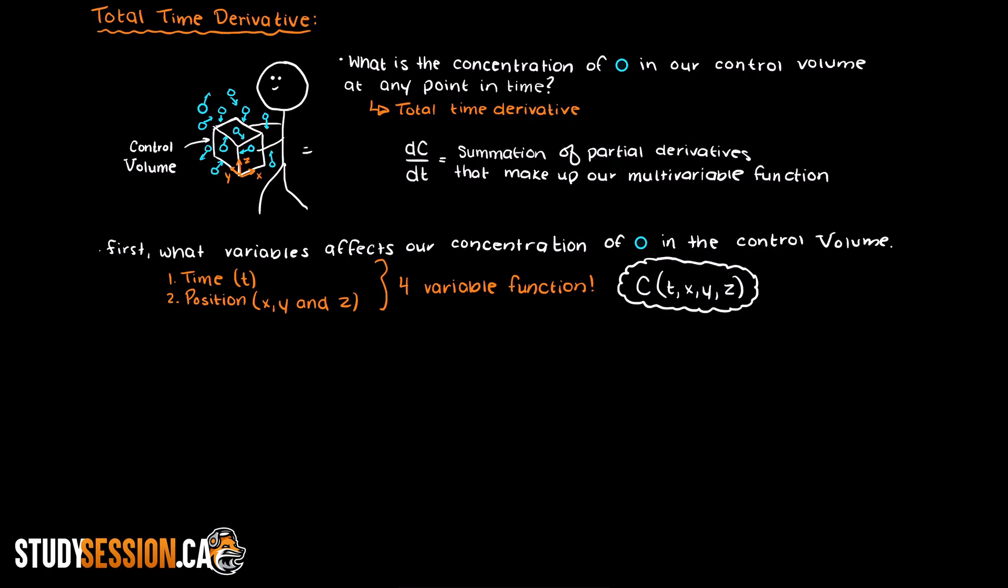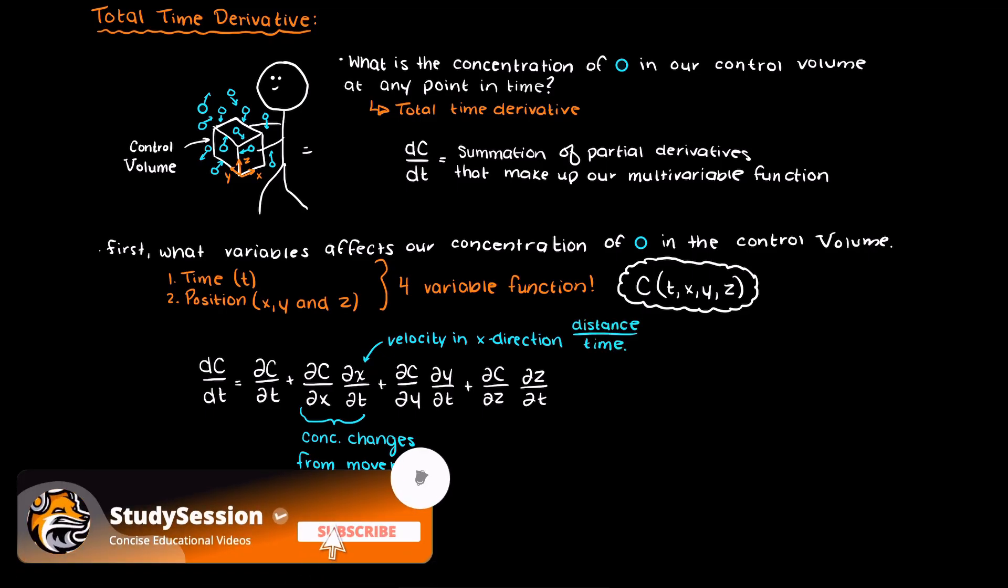Therefore, mathematically, we can break down each of these four variables into a summation of partial derivatives, which is basically saying the sum of what concentration changes happen because of t plus whatever concentration changes happen because of x and so forth. Just note that these three spatial terms here represent the velocity at which we are transporting our cube, our control volume, in the three spatial directions.